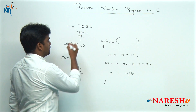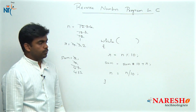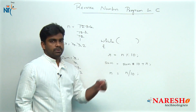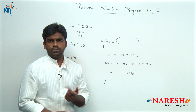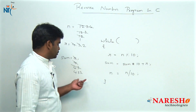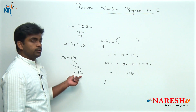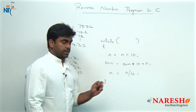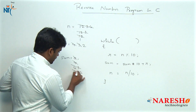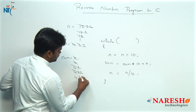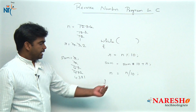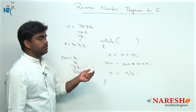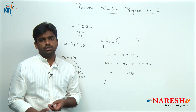12 becomes 1. Again the loop repeats. 1 mod 10 gives remainder 1. So sum into 10 means 432 multiplied by 10 is 4320, plus 1 gives 4321. And N by 10 — 1 divided by 10 gives 0.